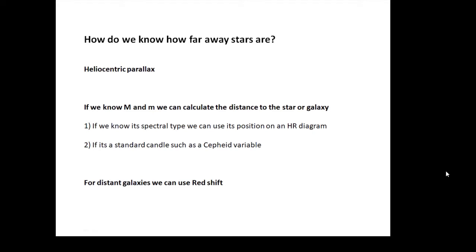But the other methods I've actually covered in other videos. For example, I've mentioned when we did HR diagrams, if you know where a star is on an HR diagram from its spectral type, then you know what its absolute magnitude is, and if you know what its absolute magnitude is, then you can work out how far away it is.